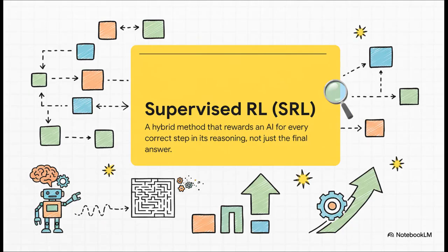So what is it? It's called supervised reinforcement learning, or SRL for short. And the main idea here is actually incredibly smart. Instead of just giving the AI a thumbs up or thumbs down on its final answer to some complex problem, SRL gives the model a little reward for every single correct step it takes to get there.